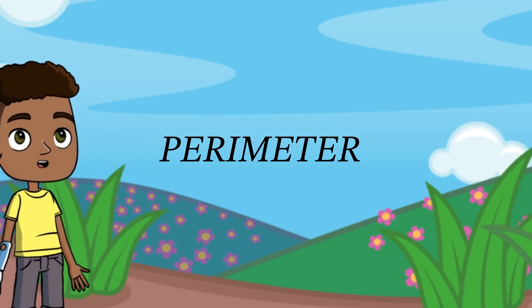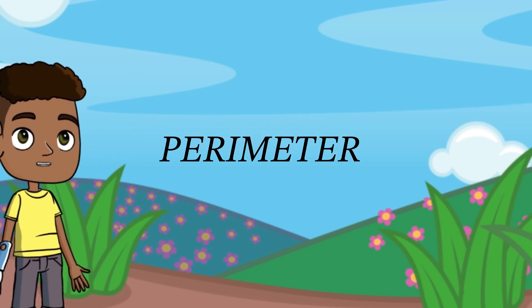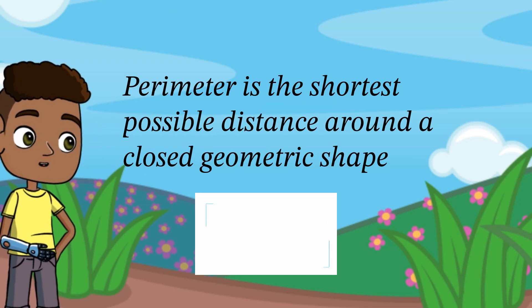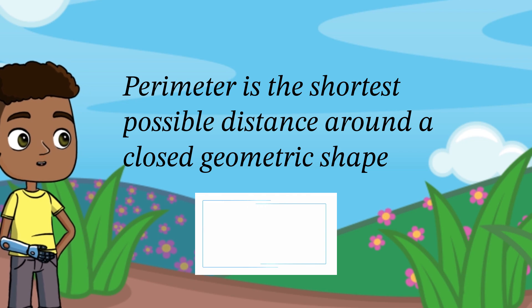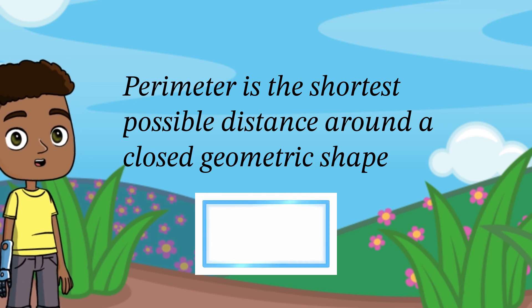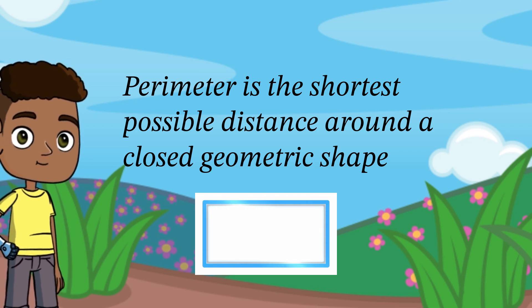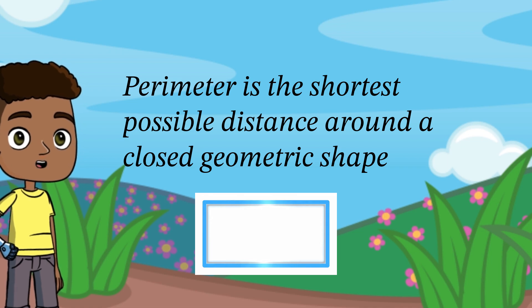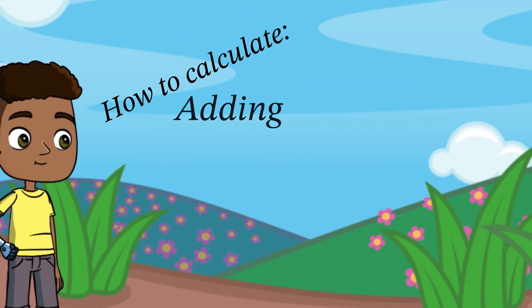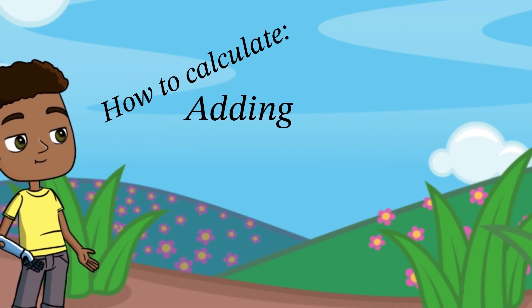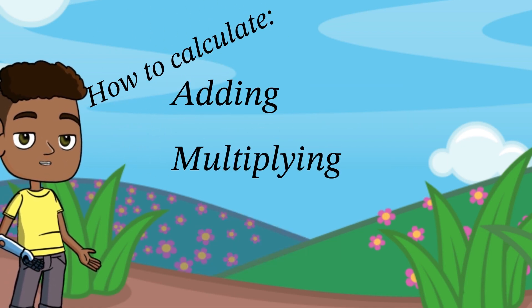Hi everyone! Our topic for today is Perimeter. Perimeter is the shortest possible distance around a closed geometric shape. We can find a perimeter by adding up all the sides or by multiplying.